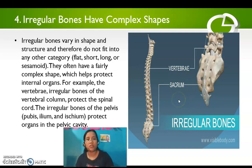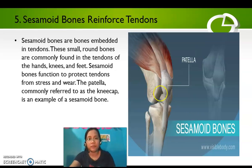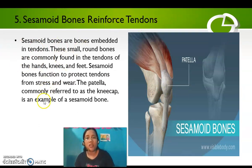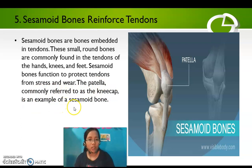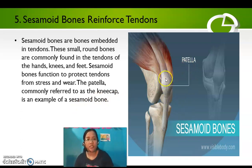Last are the sesamoid bones, which reinforce tendons. Sesamoid bones are bones embedded in tendons. These small, round bones are commonly found in the tendons of the hand, knees, and feet, and function to protect tendons from stress and wear. The patella, commonly referred to as the kneecap, is an example of a sesamoid bone.